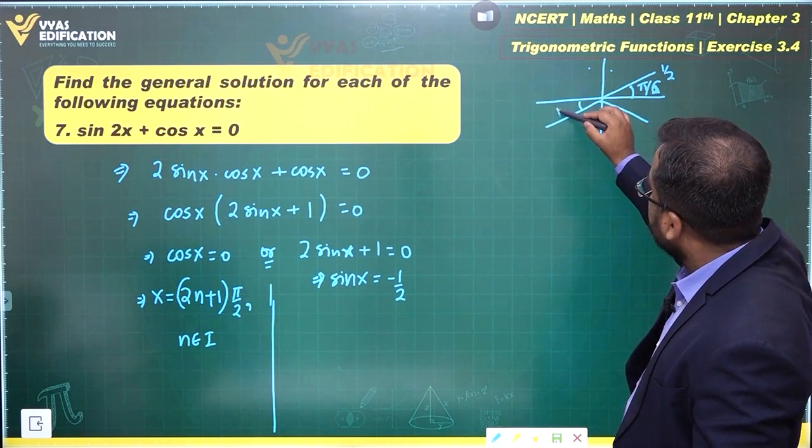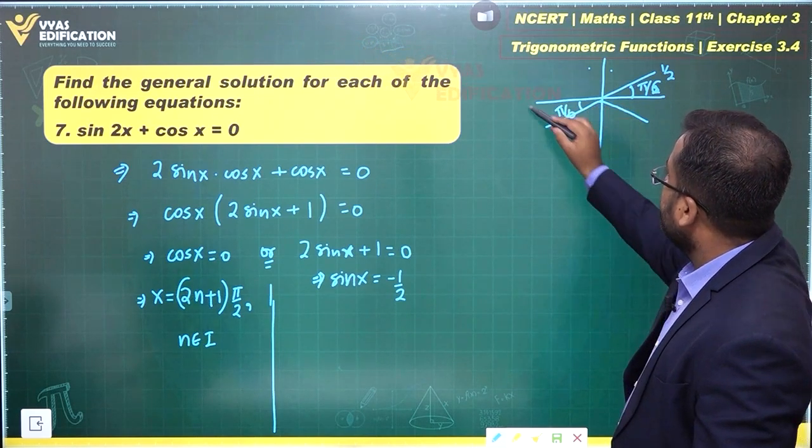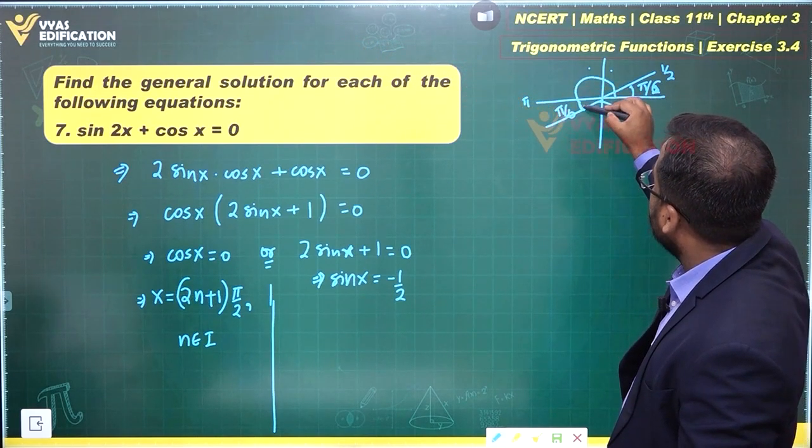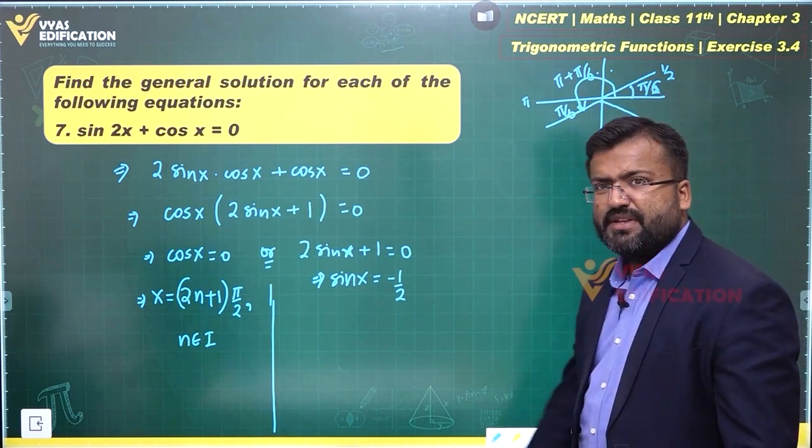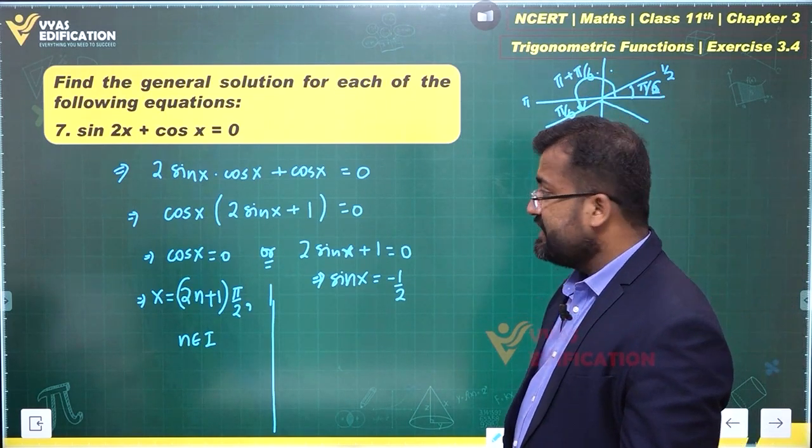Let's go to this quadrant. This angle is pi by 6. This is pi plus, so overall angle would become pi plus pi by 6. This is sin 7 pi by 6.